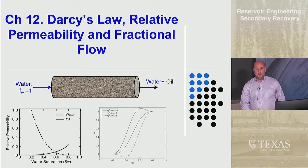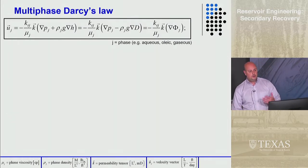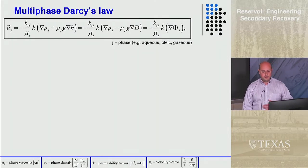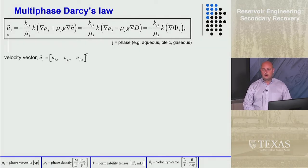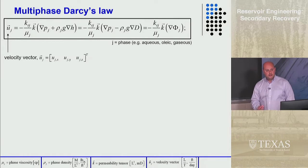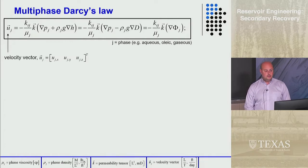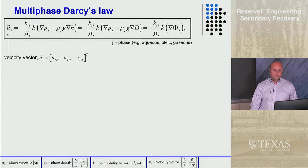We've been talking about Darcy's law, relative permeability, and fractional flow. We introduced the multi-phase form of Darcy's law. In this equation, U is the Darcy velocity — it's the flow rate divided by the cross-sectional area. In three dimensions it can be a vector; in one dimension it's just a scalar. The subscript j indicates the phase. So if we have two phases, oil and water, j could be O for oil, w for water. If we had a third phase gas, you could have u_g. Every phase has its own velocity.